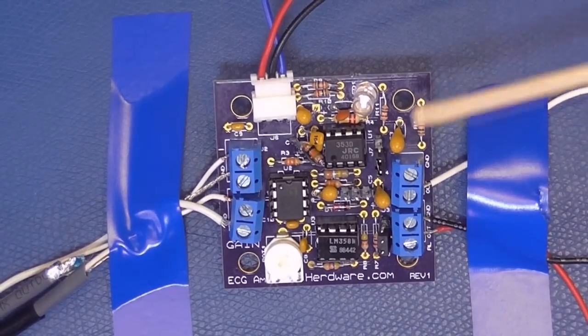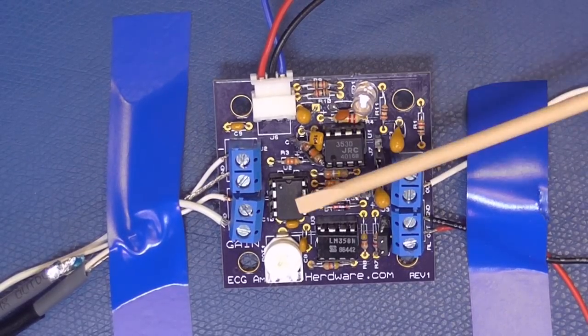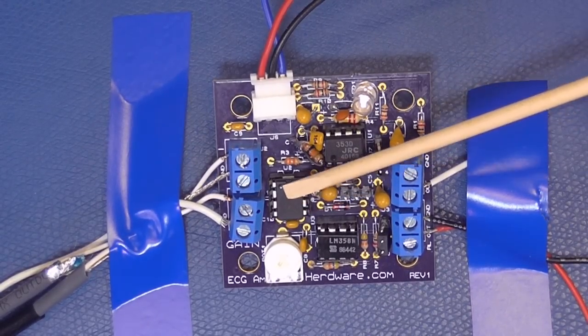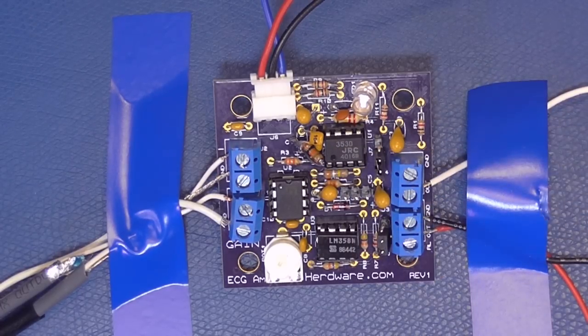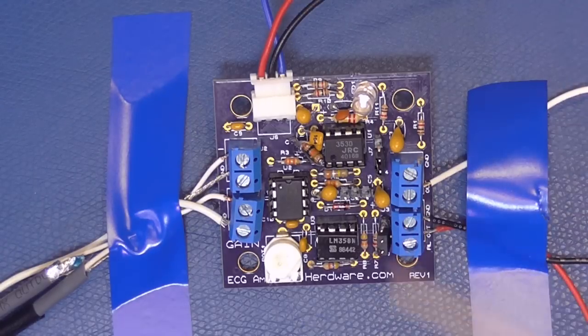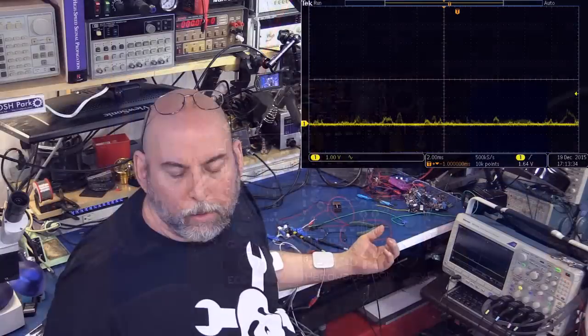Here is our circuit as I stuffed it. So we've got our instrumentation analog amplifier here, and a couple of dual op amp packages. I could have made it a quad, but things get a little crowded sometimes.